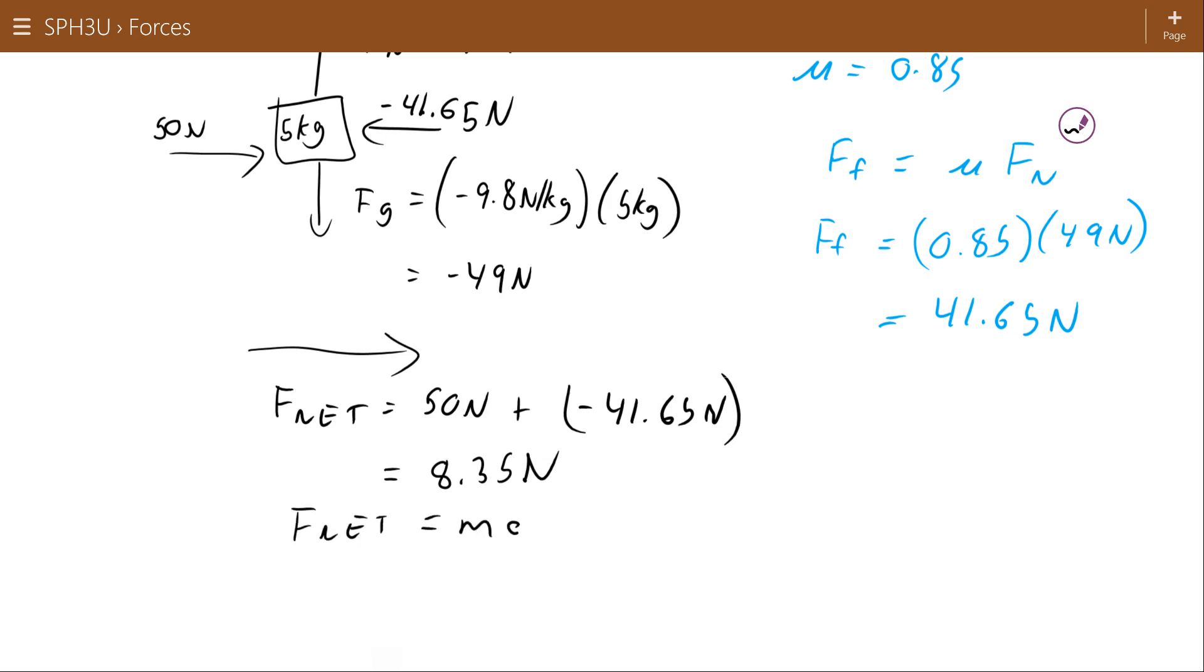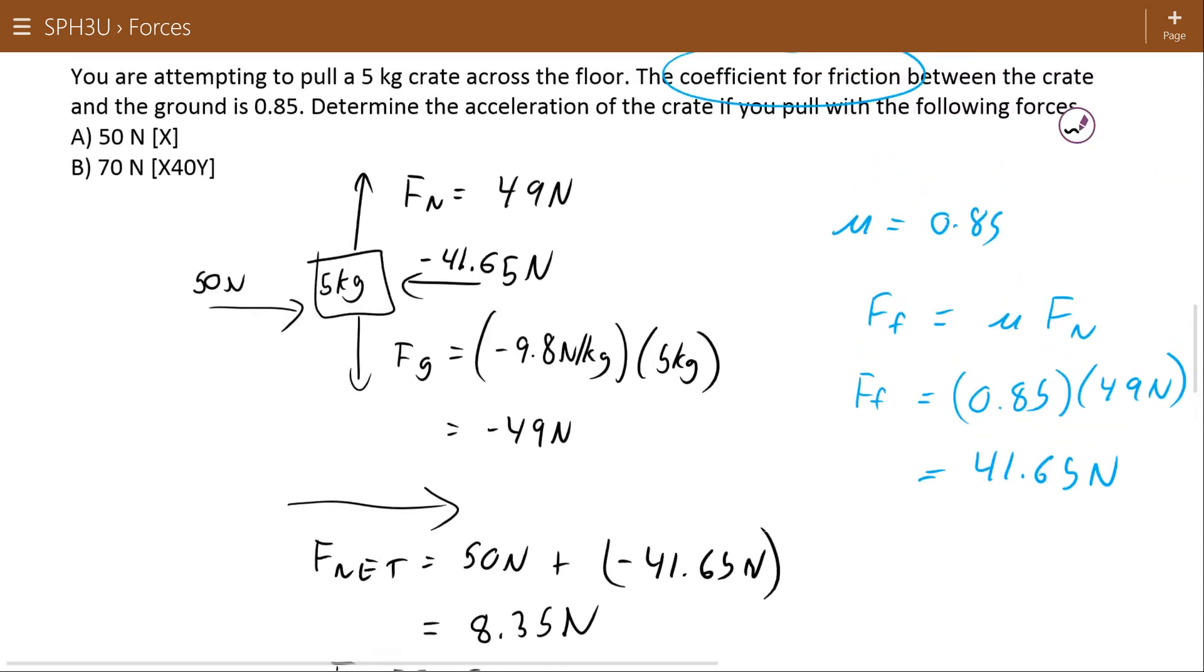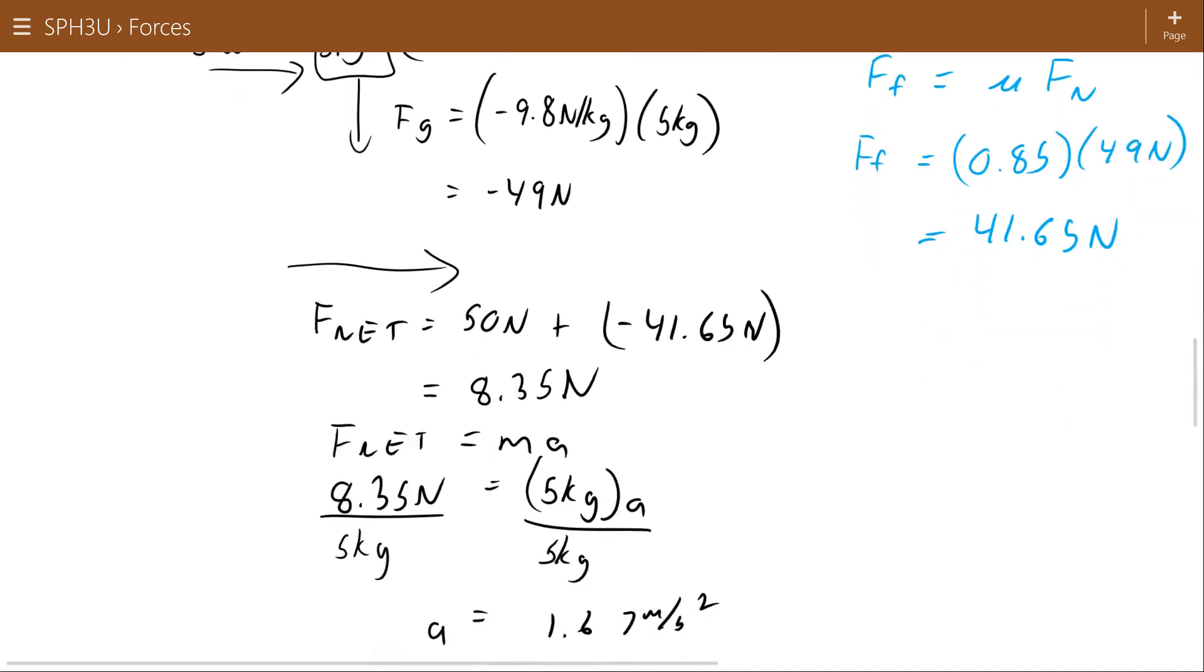Using Newton's second law, Fnet equals ma, dividing both sides by 5 kilograms, a works out to be 1.67. So there you go. We have some applied force. We can get a force of friction using our normal force, and with all that in mind, then the applied force less the force of friction leads to a net force and an acceleration.